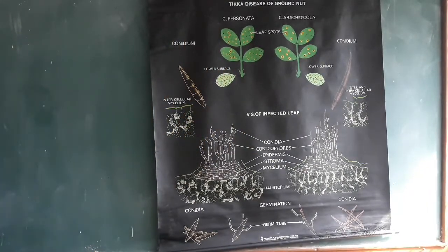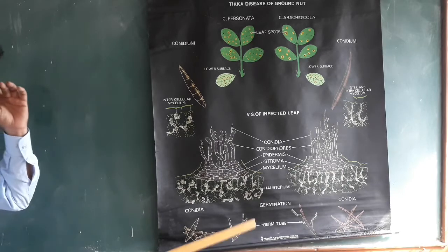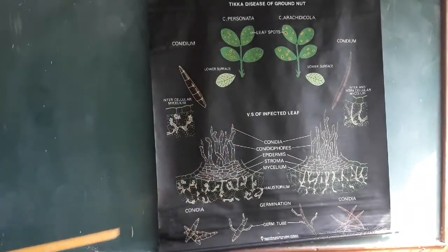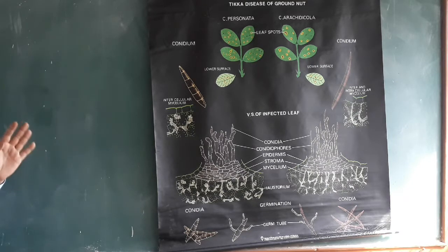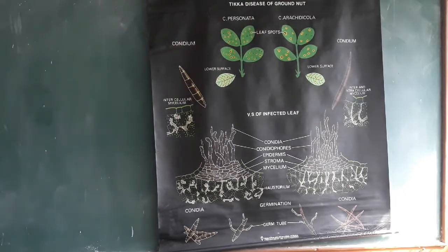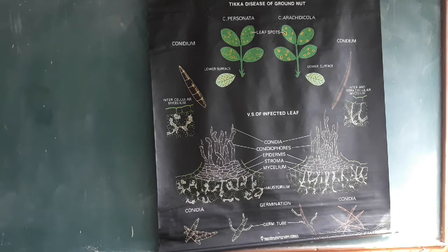Symptoms are the external visible expressions of disease under pathogenic conditions. There are different types of symptoms developed on infected plants. The first symptoms appear when the plants are one to two months old. Due to excessive spotting on the leaves, there is gradual weakening, resulting in defoliation.